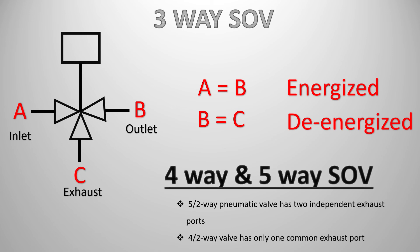We also have four-way and five-way solenoid valves, where the number of ports increases with the valve type. In a four-way solenoid valve there is only one common exhaust port, whereas in a five-way solenoid valve there are two independent exhaust ports. These solenoid valves are used in different applications as per the process demand.